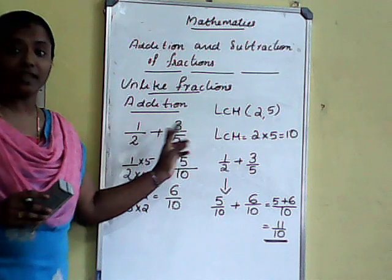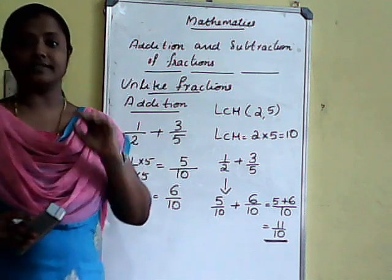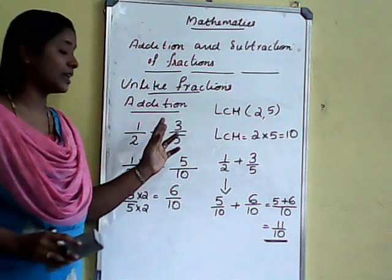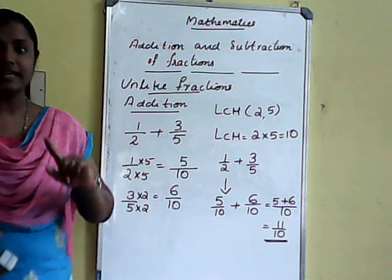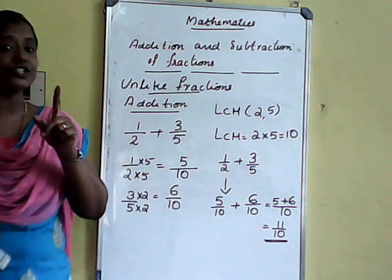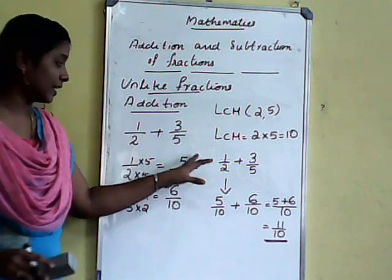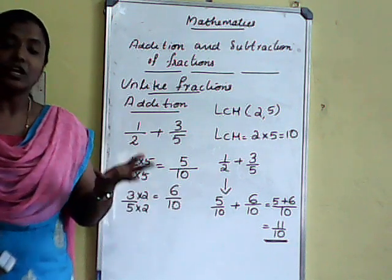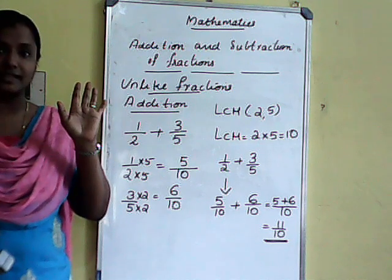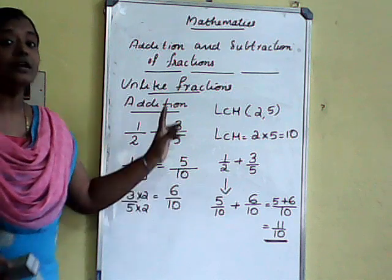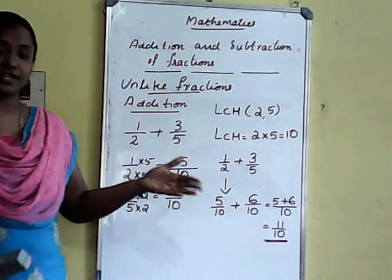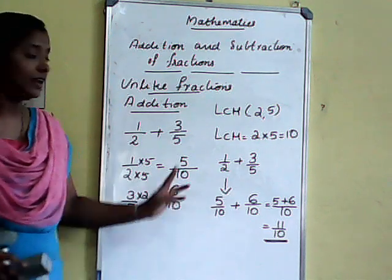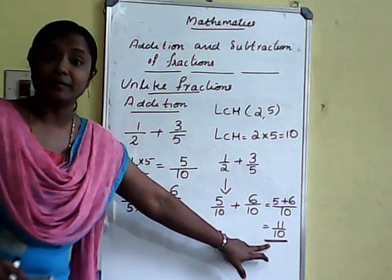Don't calculate 1 plus 3 and 2 plus 5 directly. For unlike fractions — addition or subtraction — the first step is to change them to like fractions by finding LCM. After that, we can do the operations. So 1 by 2 plus 3 by 5, the answer is 11 by 10.